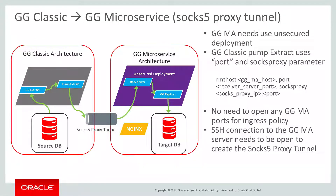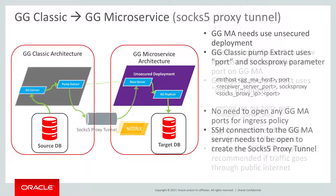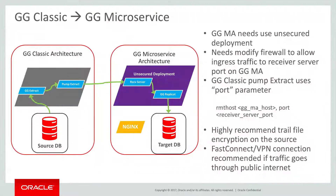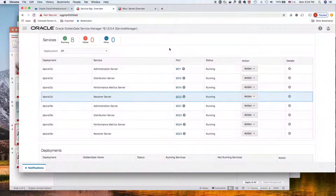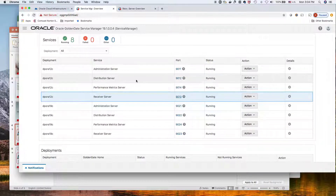Those are the two different methods we can use to connect from classic architecture to microservice architecture. Now I'm going to show you the demo. The first example will be the pump extract talking directly to the receiver server. Let's take a look at our microservice architecture configuration. We already have the microservice architecture running.